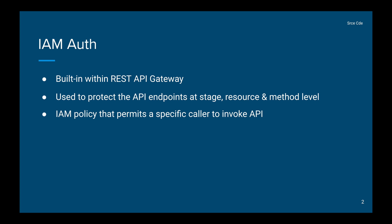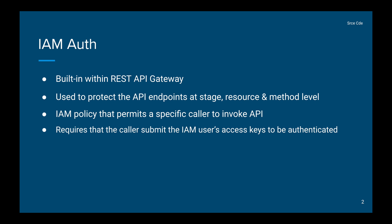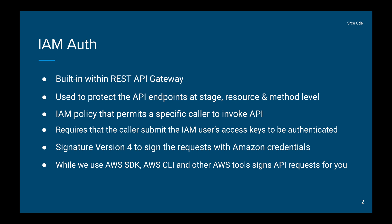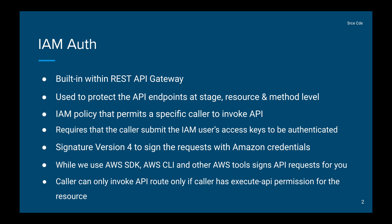To protect the API endpoint, we need to define an IAM policy that permits the caller to invoke the API endpoint. Once we have the policy in place, the user or caller needs to submit the IAM user's access keys to be authenticated. Signature Version 4 is used to sign the request with the Amazon credentials. The signing process is done automatically when using AWS SDK, AWS CLI, or any other AWS tools — we don't need to explicitly sign the request.